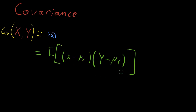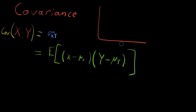This equation multiplies the deviation of x from its mean by the deviation of y from its mean, which may not make immediate sense. To help understand, let's look at an example where we have a data set plotting x versus y — samples from the distribution of x and samples from the distribution of y.